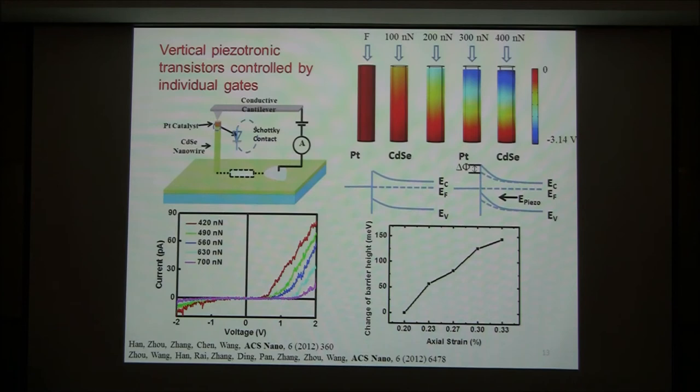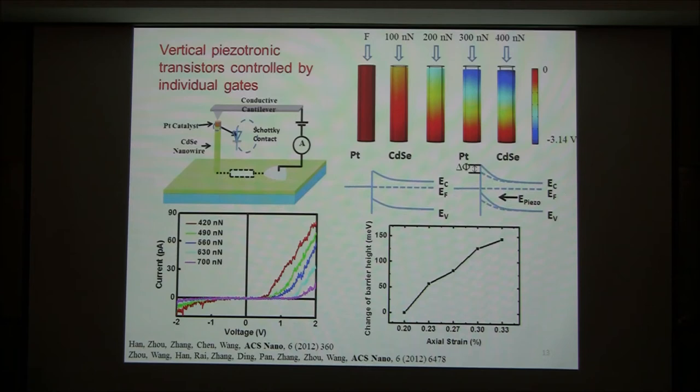We not only make lateral devices, we also make vertical devices. This is the vertical device here. You apply mechanical strain, apply force, and produce the polar charge here. The present polar charge changes the barriers when the carrier flows through here. We can shift the turn-off voltage to a higher value. As you see experimentally, when the force increases from 420 nN to 700 nN, the turn-off voltage shifts from about half a volt to about one and a half volts.